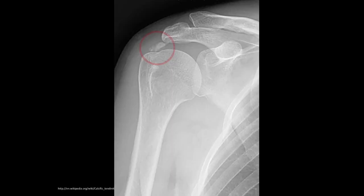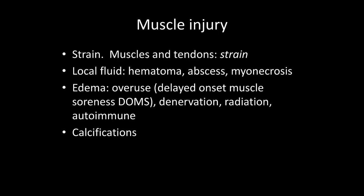Here we have calcific tendinopathy or tendinitis of the distal supraspinatus — I can say it's the distal supraspinatus because that's where I expect it on this external rotation image of the shoulder. You can actually see a lot here: the biceps longhead tendon, the lesser and greater tuberosity, and the intertubercular groove between them where the biceps longhead tendon lives. Normal alignment of the bones. When talking about muscle injuries that are not a frank tear, we're talking about a strain. Muscles and tendons strain; ligaments sprain. That's the correct terminology.